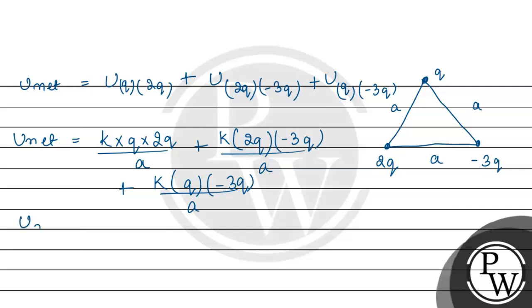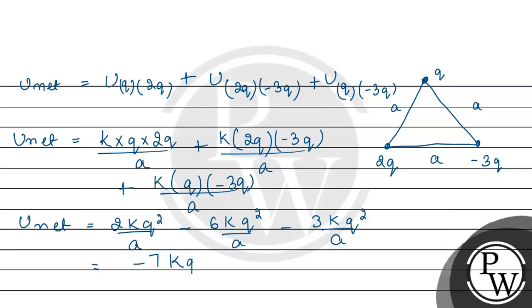अब simplify करते हैं: 2KQ²/A minus 6KQ²/A minus 3KQ²/A। तो minus 6 minus 3 = minus 9, और minus 9 plus 2 = minus 7। So यह हो जाएगा minus 7KQ²/A।